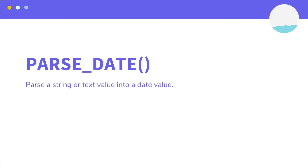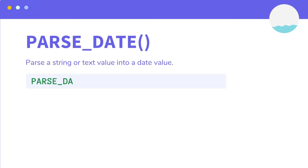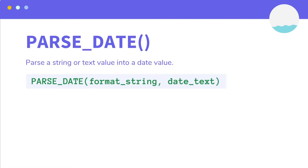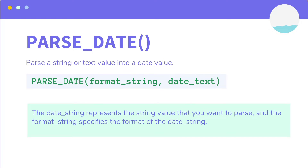With that in mind, let's look at the syntax of the parseDate function. The syntax is PARSE_DATE, and inside the parentheses you specify the format string — which is the format of the date string — followed by the date text, which is the string value that you want to parse.